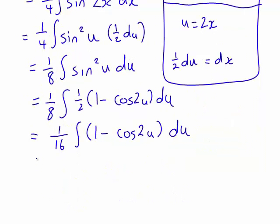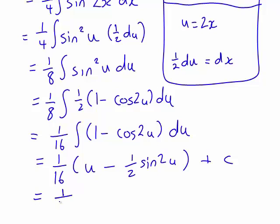And this now looks a lot more manageable. We can now integrate this. This becomes 1 sixteenth times u minus, and this part here, I'm just going to keep the 1 sixteenth out the front as a common factor for now. Cos 2u will become a half sine 2u when we integrate that, plus c. Expanding out those brackets, that's just going to become 1 on 16 multiplied by u minus 1 on 32 sin 2u plus c.